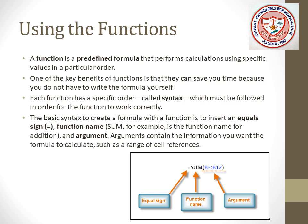As shown in the picture, the equal sign is placed first, then SUM as the function name, then inside the first bracket: B3 colon B12. B3 to B12 is the range of cells — the numbers inside those cells are what we want to calculate the sum of using this function. The equal sign is placed, then the function name, then the range of cells whose numbers we want to calculate.